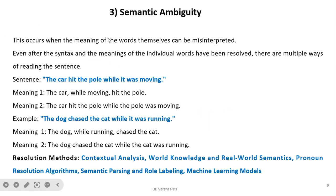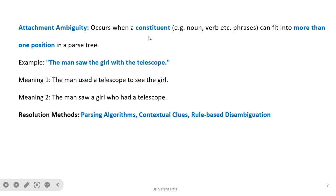Attachment ambiguity occurs when a constituent — such as a noun phrase, verb phrase, or prepositional phrase — can fit into more than one position in a parse tree. For example, 'the man saw the girl with the telescope' — two possible interpretations: the man used a telescope to see the girl, or the man saw a girl who had a telescope. It is not clear whether the man or the girl is carrying the telescope. Resolution methods include parsing algorithms, contextual clues, and rule-based disambiguation.